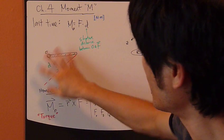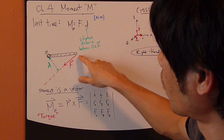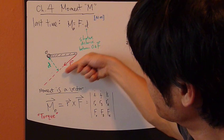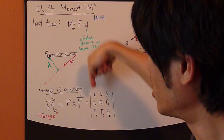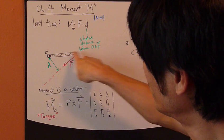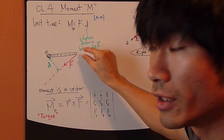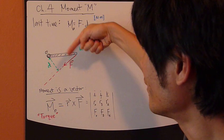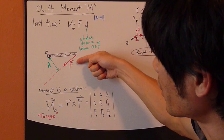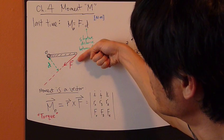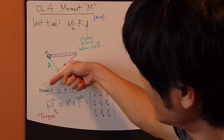So in this case right here, this particular example, this force is applied at an angle. Instead of perpendicular to this direction of this rigid body right here, it's applied at an angle. So moment created by this force about this point O is simply the magnitude of this force times